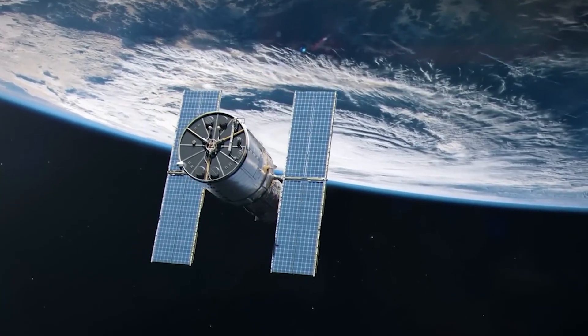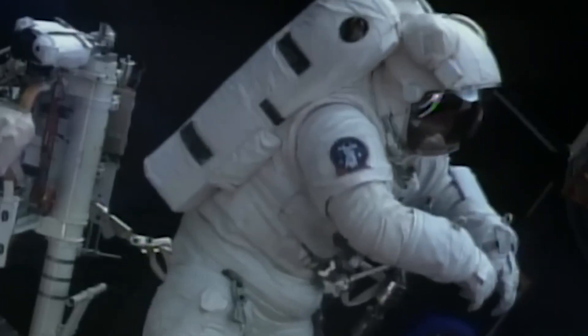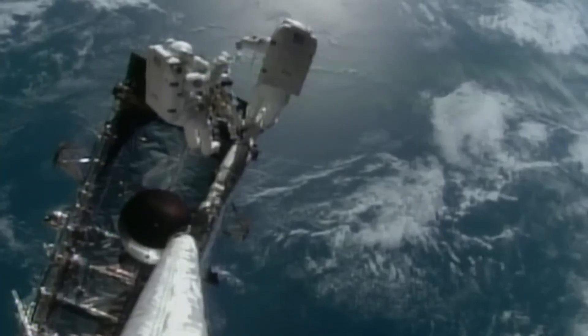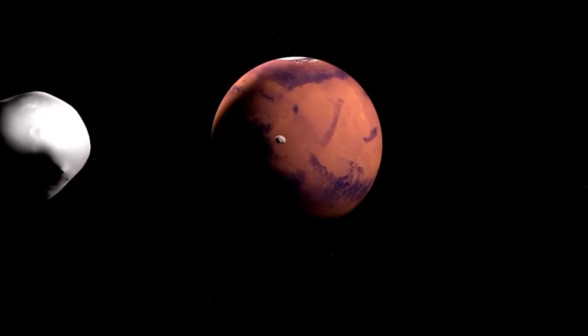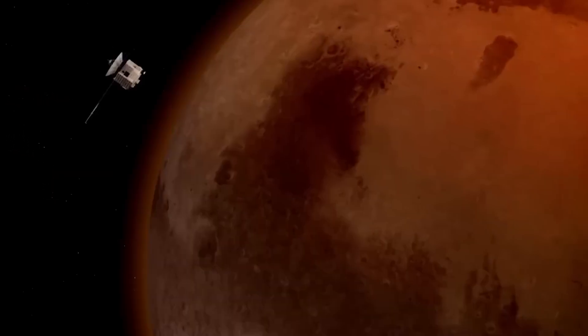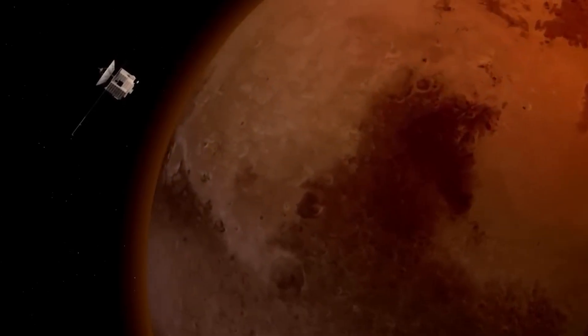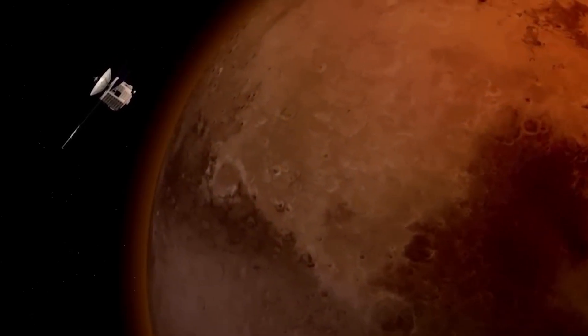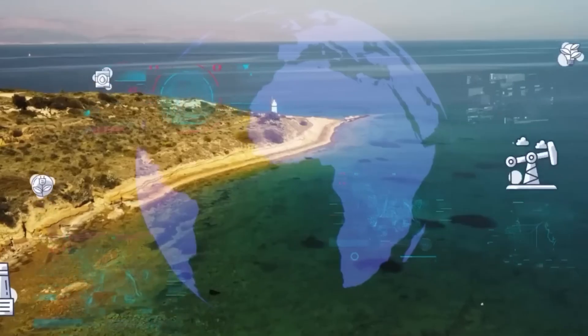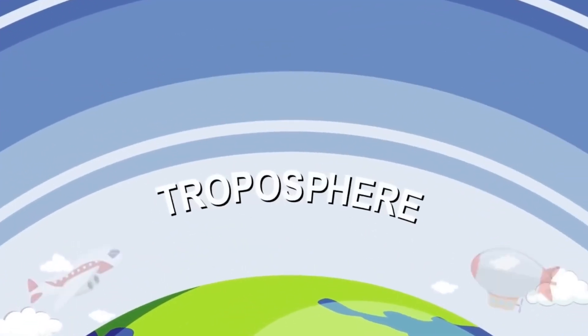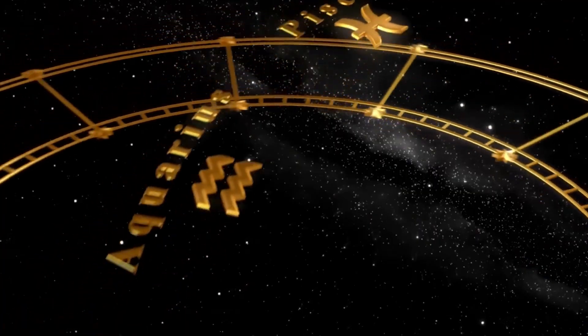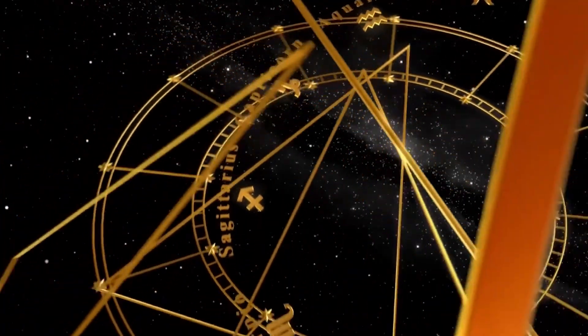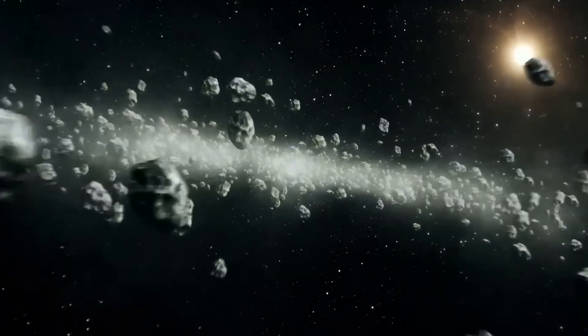Many asteroids in the belt are not solid monolithic rocks, but fragile rubble piles held together only by weak gravity, making them vulnerable to even slight disturbances. Another dramatic example of the asteroid belt's dynamic nature is P-2010 A2, which was initially mistaken for a comet due to its tail-like features. Upon closer examination, however, astronomers realized that its nucleus was surrounded by an unusual X-shaped filamentary structure, the clear signature of a collision between two asteroids.